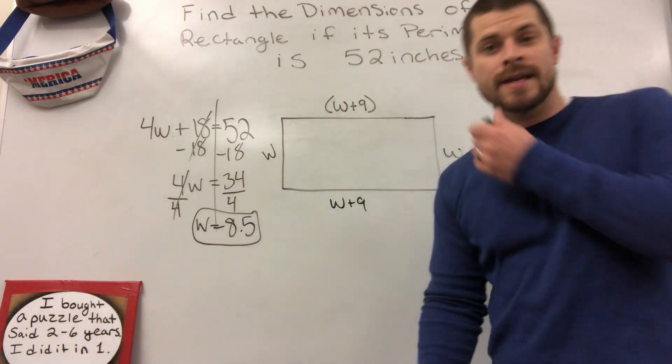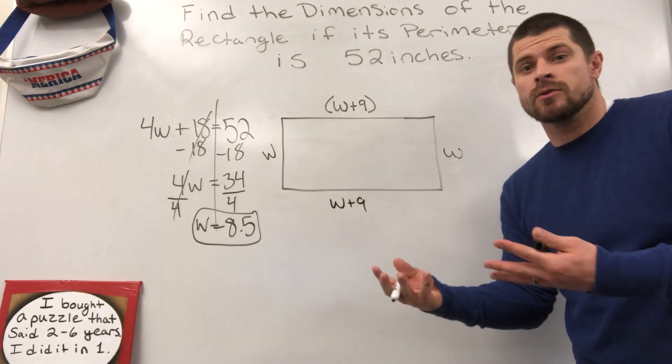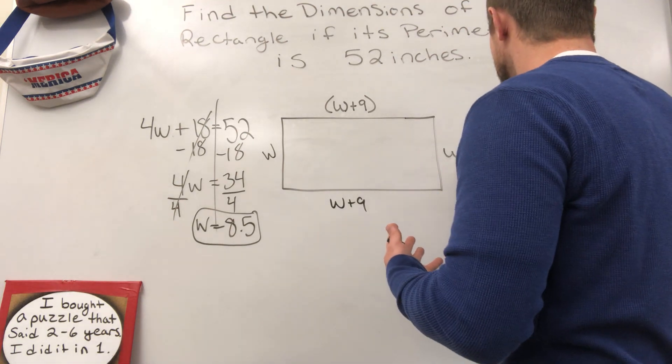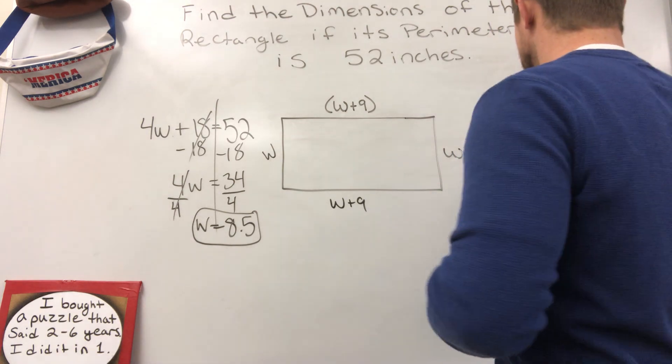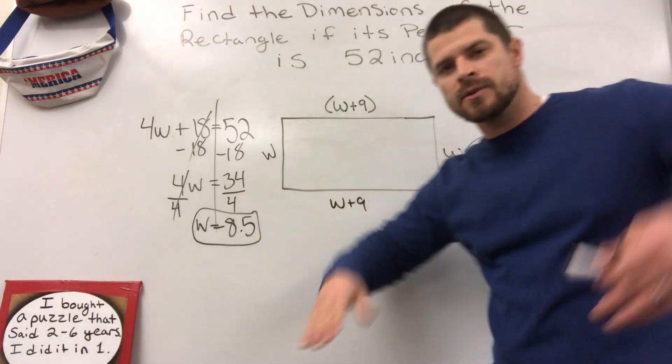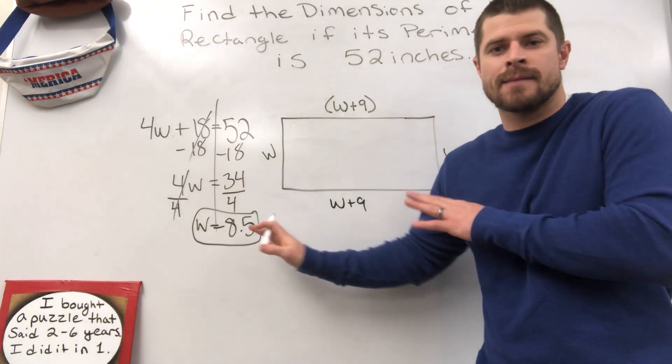Okay. Well, I know that this side right here of the rectangle, since it's only W, I know that's 8 and a half inches. But this is where kids make mistakes. They stop right here. They say, found W. Boom. Done. You can't catch me teach. That's it. I'm done.